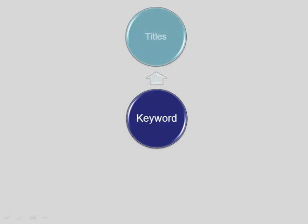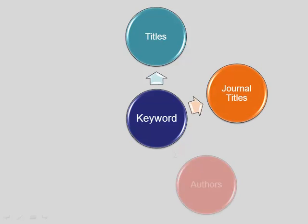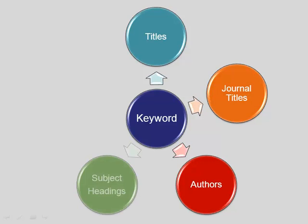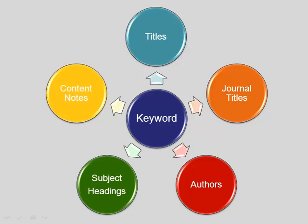Keyword searches are the broadest kind of search. Keyword searches find the words wherever they show up — in titles, journal titles, authors, subject headings, and in contents notes, where you'll find lists of plays in an anthology, songs on a recording, or chapters in a book.